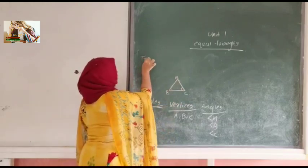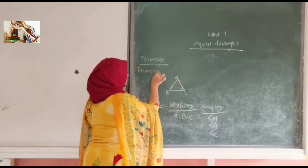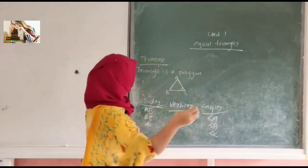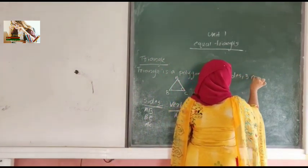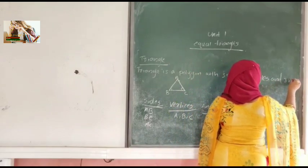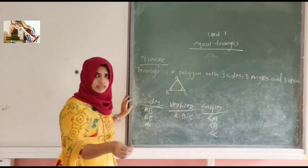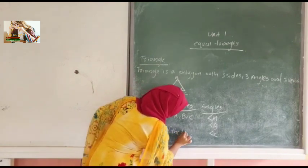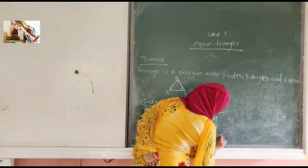Take your notebook and write the subheading 'Triangle'. A triangle is a polygon with three sides, three angles, and three vertices. We also know that the sum of the total angles of a triangle is 180 degrees.